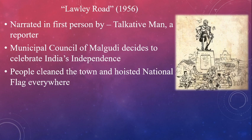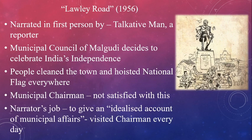R.K. Narayan hints subtly that even when a country gets independence, things may not happen in a smooth or appropriate manner. After 15th August 1947, the municipal council emerged as an active legislature. The narrator's job was to report and give an idealised account of municipal affairs, visiting the chairman every day. He was trying hard to make a living out of news reports for a newspaper that paid him only 2 rupees for every inch of published news.